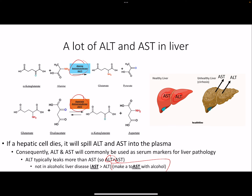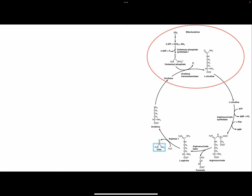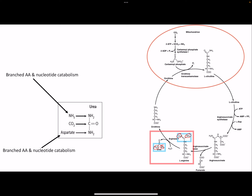The two nitrogens in urea come from arginine, but originally where did they come from? The first nitrogen comes from muscle protein breakdown - through glutamate and alanine back to glutamate. The second nitrogen comes from aspartate, which enters through the coupled half-Krebs and urea cycle reactions.